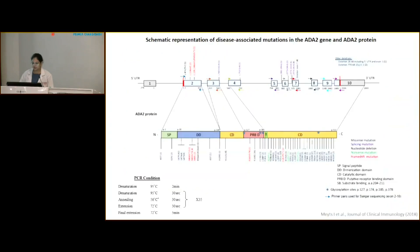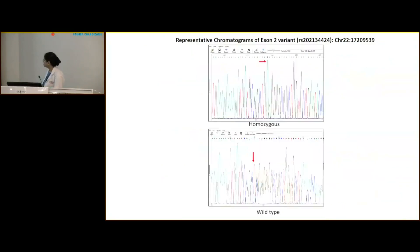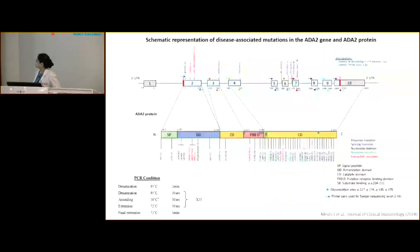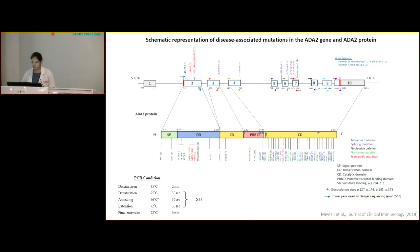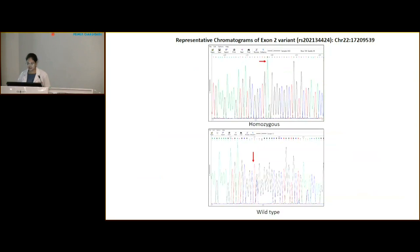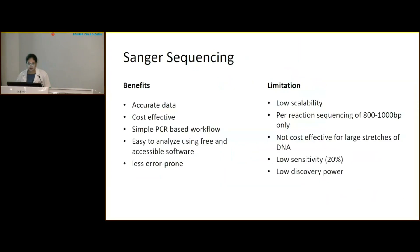Here is an example of the ADA2 gene, which is associated with the DADA2 phenotype. The gene has nine coding exons and mutations are spread throughout the whole gene. Since it is nine to ten exons, one can easily go for Sanger sequencing — as mentioned, if it is a single target or a small gene, Sanger sequencing is appropriate. This is a representation of the chromatogram we analyze for sequencing.